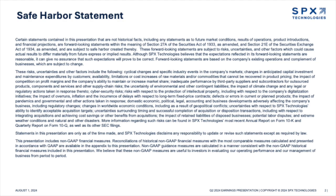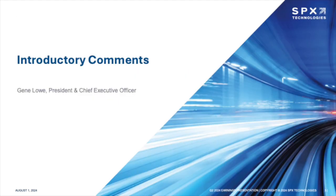This guidance update reflects our strong Q2 performance and second-half outlook, particularly on margins. In HVAC, we are increasing revenue guidance by $5 million to reflect stronger cooling volumes and raising margin guidance by 75 basis points to reflect more efficient production and more favorable sales mix. In detection and measurement, we are raising our outlook for segment income and increasing margin guidance by 75 basis points, as we continue our initiative to drive segment margins to historical levels. At a total company level, we anticipate adjusted EBITDA in a range of $410 million to $430 million. At the midpoint, this reflects year-on-year growth of 35% and a margin of approximately 21%.